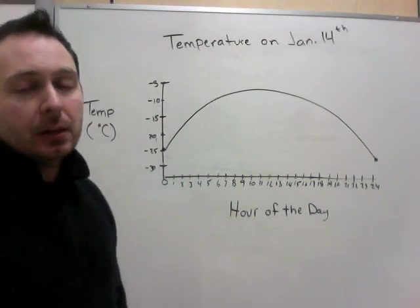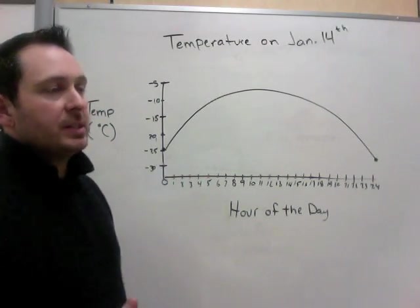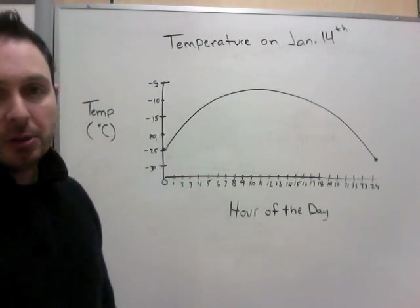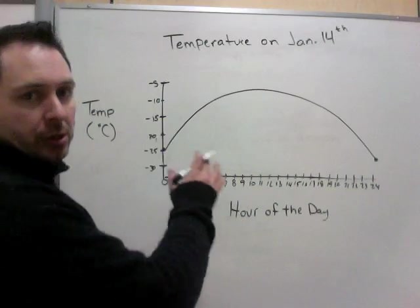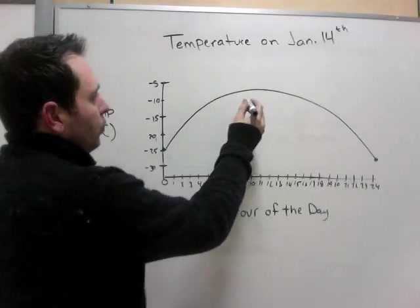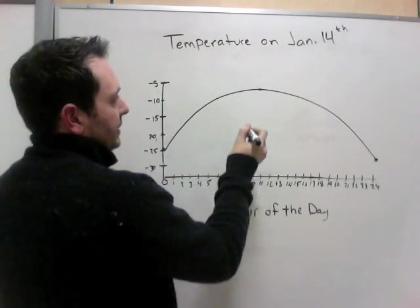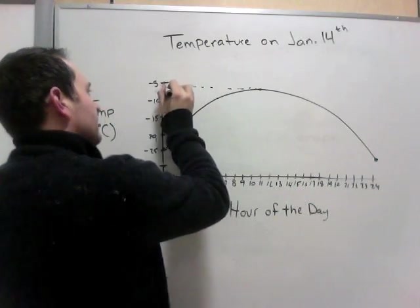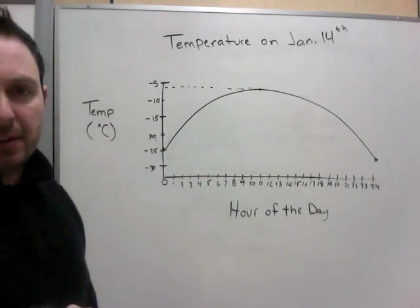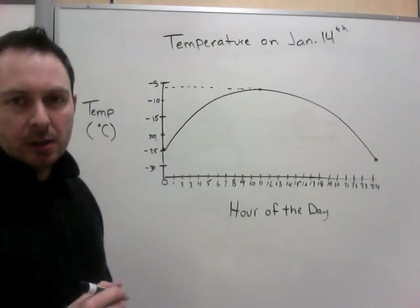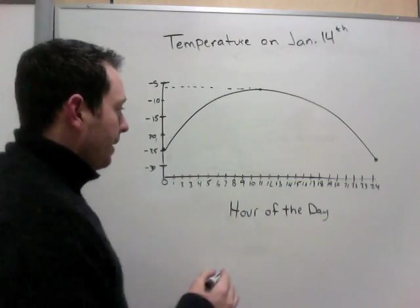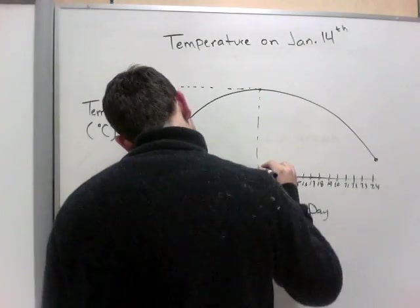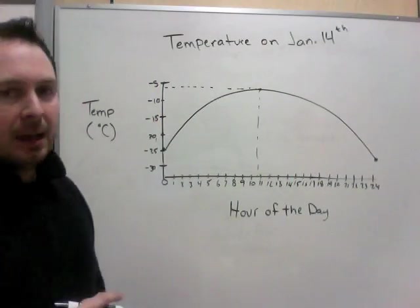Some information we can get from this. It might say, the question would say, what is the warmest temperature that day on January 14? So, temperature is on this axis. So, the warmest temperature happens here at our high point. It looks to be about minus 7, minus 6 degrees. What time of day did the warmest temperature happen? Well, on this day, the warmest temperature happened at about 1030.